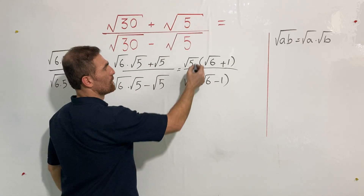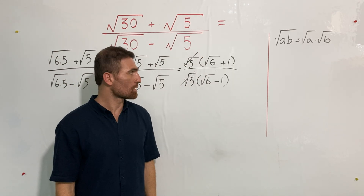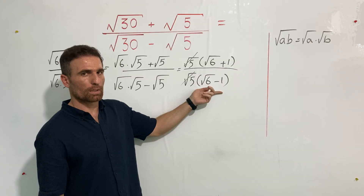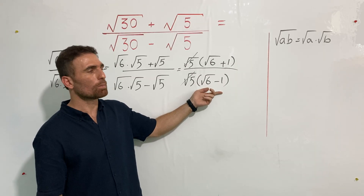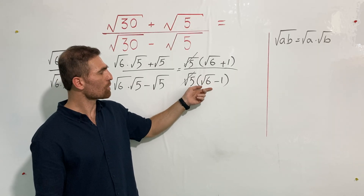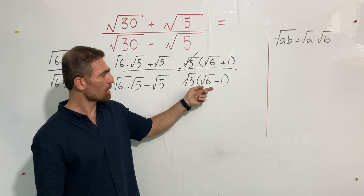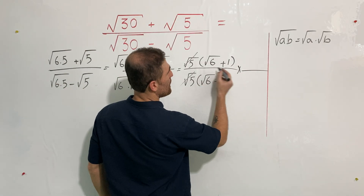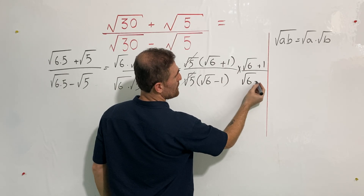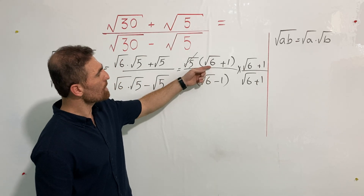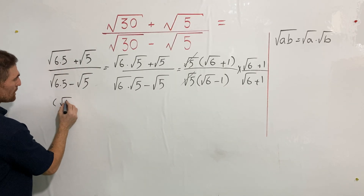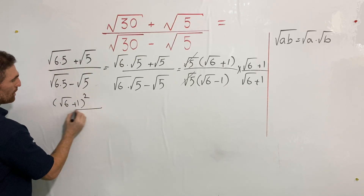Now what should we do as the next step? We have square root of 6 plus 1 on top and square root of 6 minus 1 as the denominator. To continue the solution, I'm going to multiply both top and bottom by the conjugate of the denominator. The conjugate of square root of 6 minus 1 is square root of 6 plus 1. So let me do it: times square root of 6 plus 1 on top, times square root of 6 plus 1 on bottom.